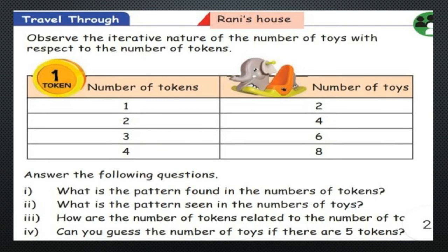What is the pattern found in the number of tokens? It increases by 1. What is the pattern seen in the number of toys? The numbers are 2, 4, 6, 8 — the difference between 2 and 4 is plus 2, so the pattern is plus 2. How are the number of tokens related to the number of toys? For 1 token they give 2 toys, and for 2 tokens they give 4 toys. Can you guess the number of toys if there are 5 tokens? Yes — the number of toys will be 10.